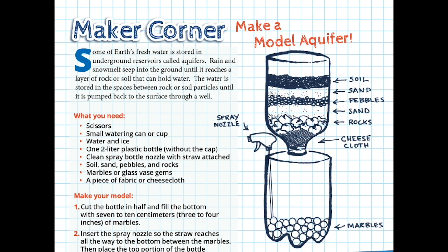Now that you know all about how NASA looks at groundwater and all that freshwater from space, we have some groundbreaking news — we are going to make a model aquifer. Some of Earth's freshwater, groundwater, is stored in underground reservoirs called aquifers. Rain and snowmelt seep into the ground until reaching a layer of rock and soil that can hold the water, stored in those spaces until it's pumped back to the surface through a well. This activity can be found on the last page of the EO Kids issue 'Water Water Everywhere' in the Maker Corner.